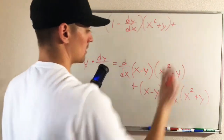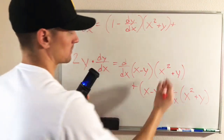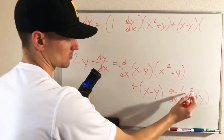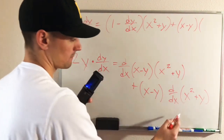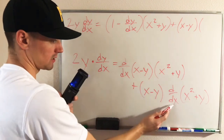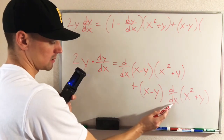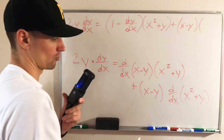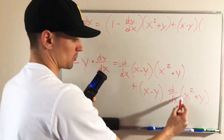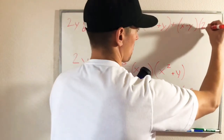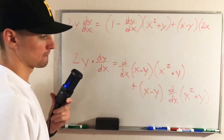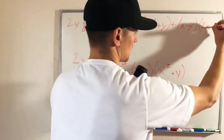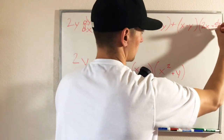And then plus x minus y times the derivative of x squared plus y. So with x squared, since we're taking the derivative with respect to x, the derivative of x squared — we'll just use the power rule — bring the 2 down in front and lower our power by 1. And then the derivative of y with respect to x is again going to give us a plus dy/dx.